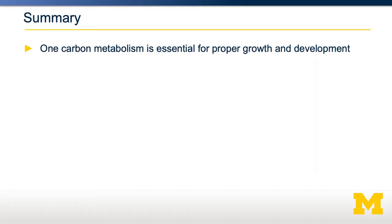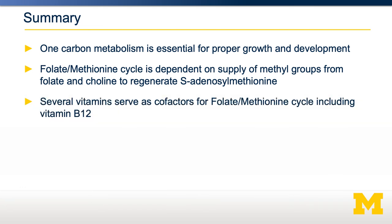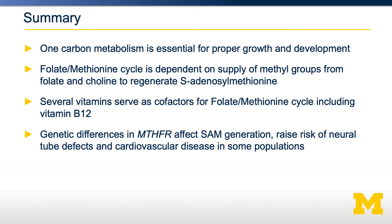In summary, one-carbon metabolism — the reactions by which methyl groups are added to various chemicals — is critical for proper growth and development. This is dependent on the regeneration of S-adenosylmethionine through the folate-methionine cycle, which relies on methyl group supply from both folate and choline. Several vitamins including B2, B12, and B6 are required for the cycle to work properly. Genetic differences, specifically in MTHFR, can affect the regeneration of SAM from folate, and loss of this function can result in neural tube defects and other phenotypes.